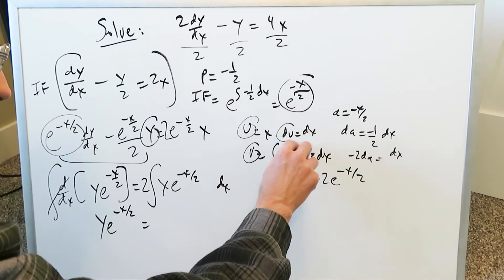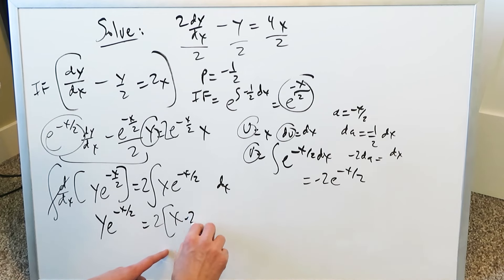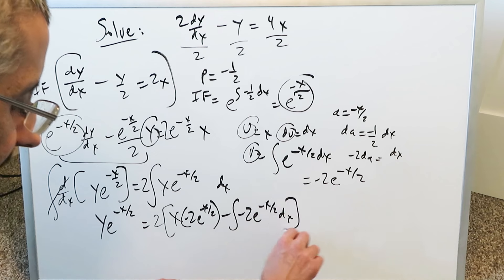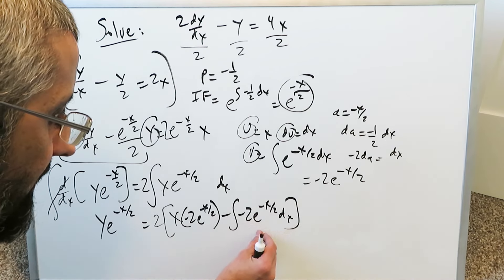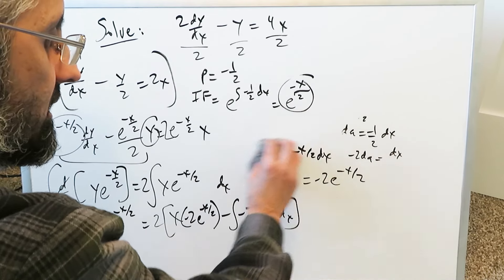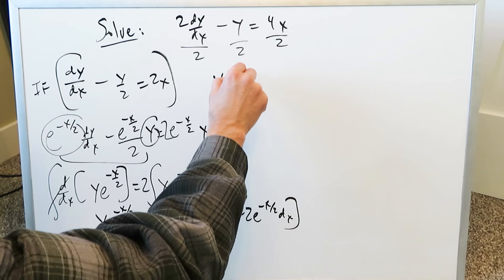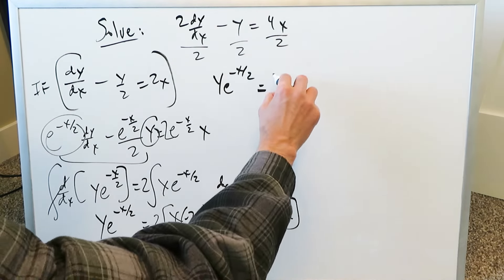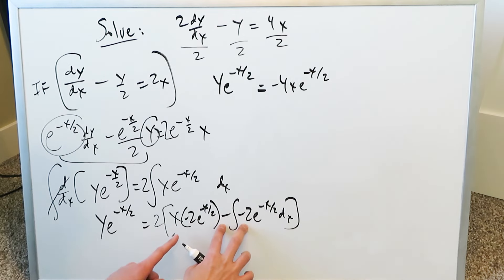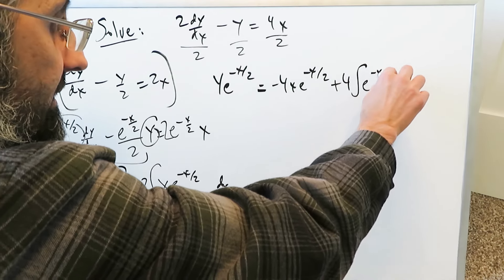You have u, v, and du, so you apply u·v minus the integral of v du, with the 2 sitting outside. That gives 2 times [x times minus 2 e to the minus x over 2 minus the integral of minus 2 e to the minus x over 2 dx]. Opening this up: minus 2 times x times 2 gives minus 4x e to the minus x over 2, and minus 2 multiplied by minus 2 gives positive 4, leaving plus 4 times the integral of e to the minus x over 2 dx.